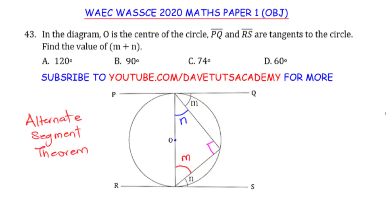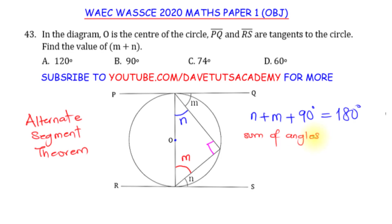So now we have this particular triangle, and the sum of its angles — N plus M plus the right angle 90 — is equal to 180 degrees. That is the sum of angles of a triangle. Therefore N plus M is going to be 180 degrees minus 90 degrees. So 180 minus 90 — that is 90 degrees.